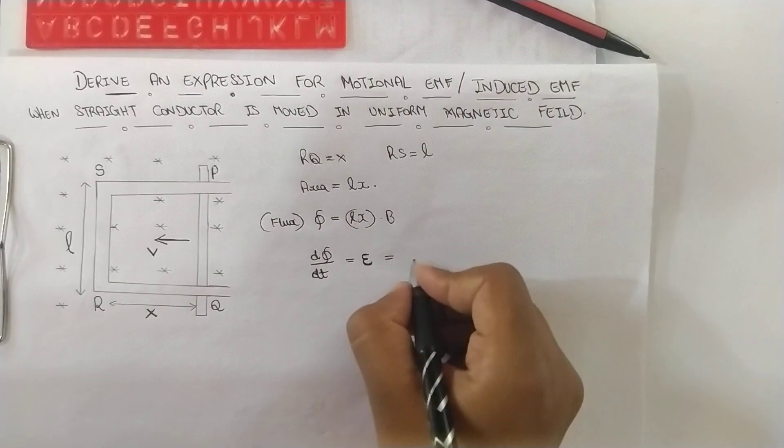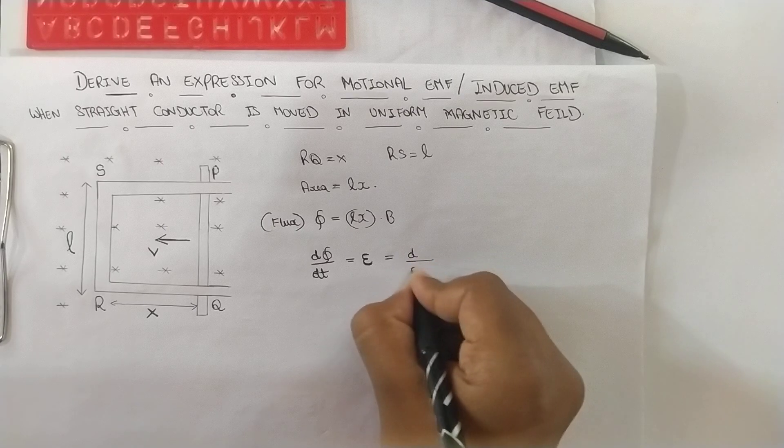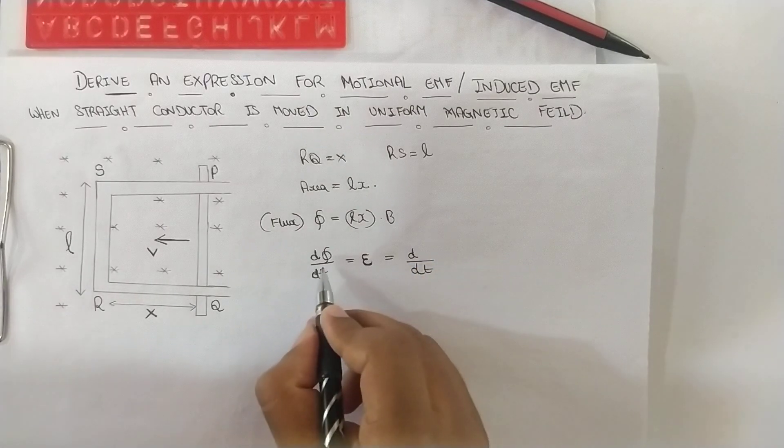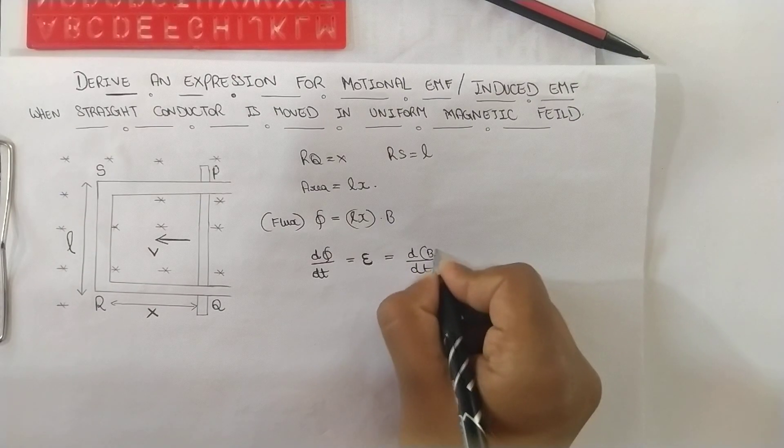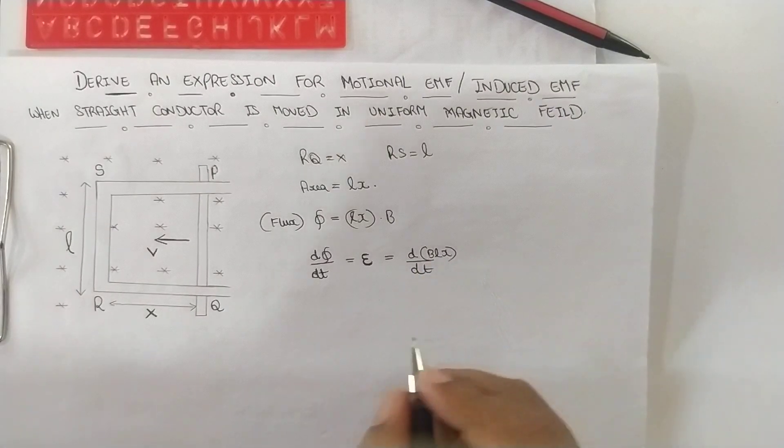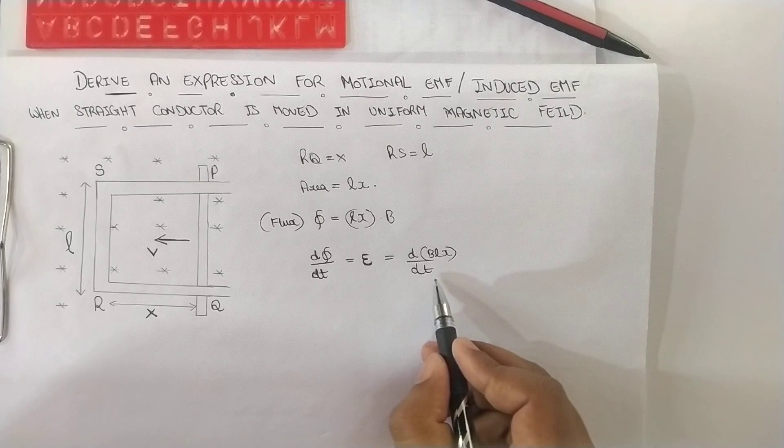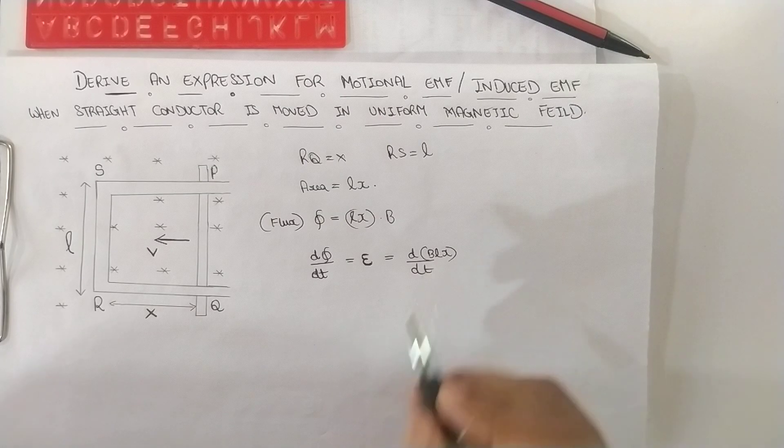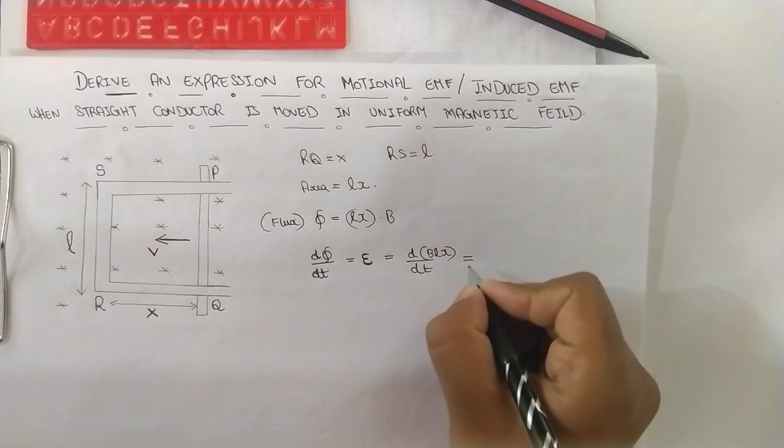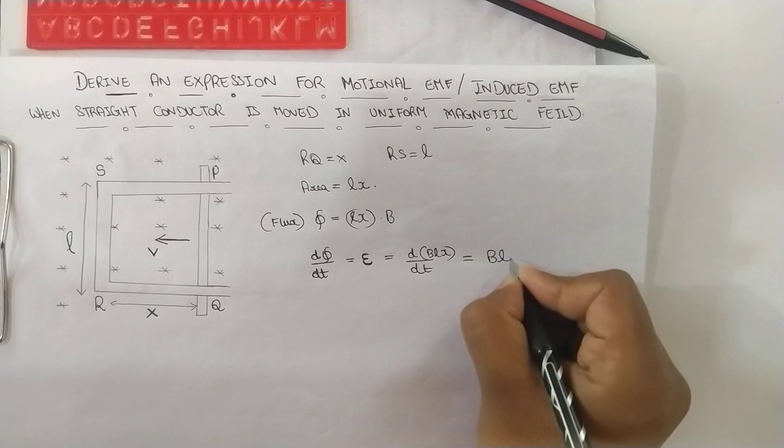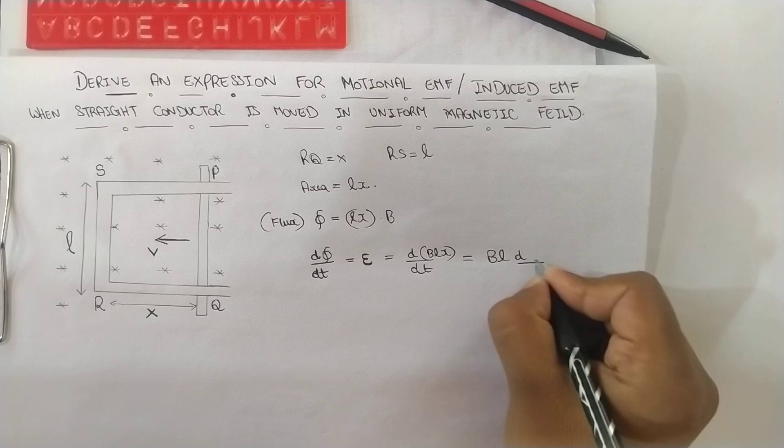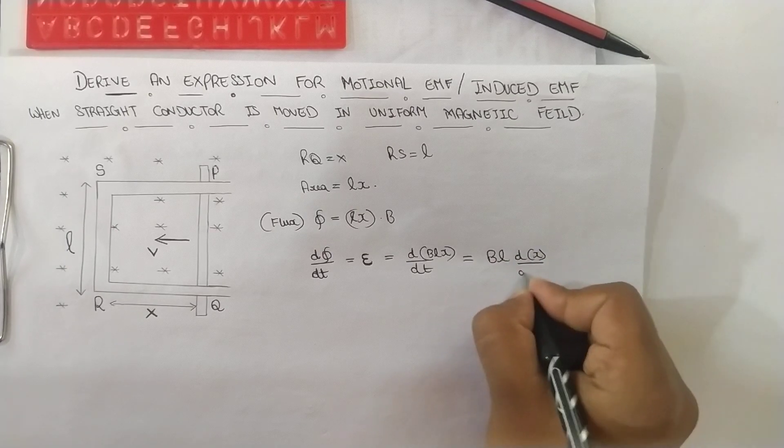So motional EMF is d phi by dt, and substituting this value in the place of phi: B LX. Now it is varying with respect to time. We have a differential statement. So this gives us B L outside and dx by dt.